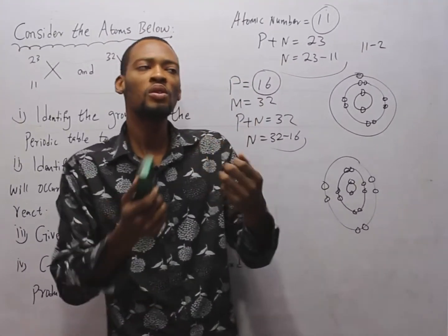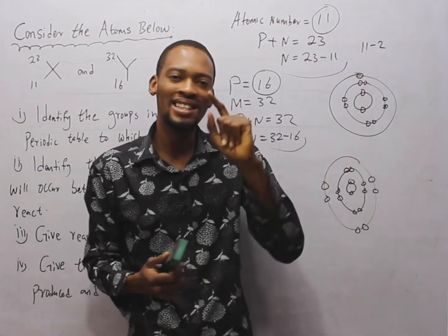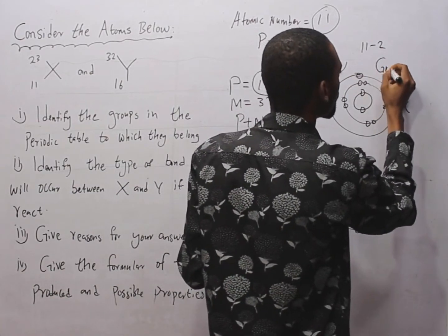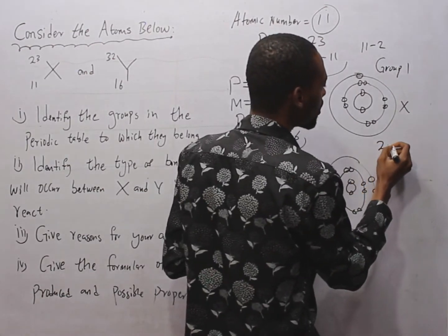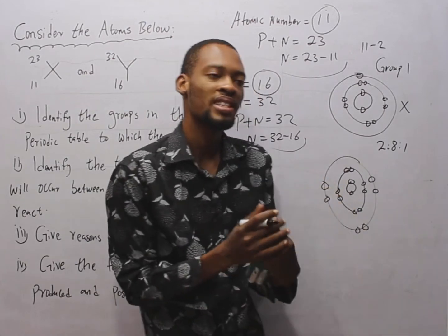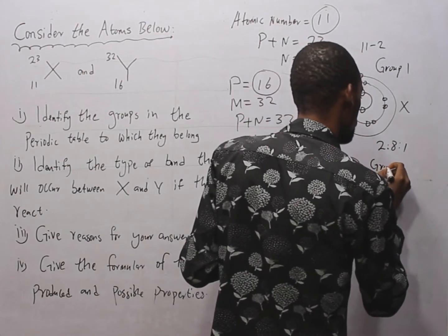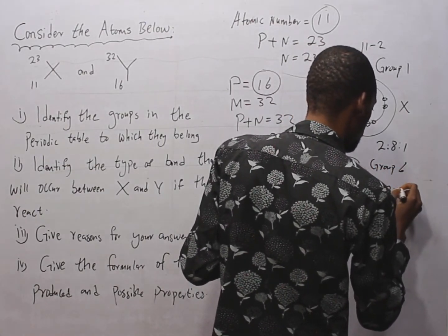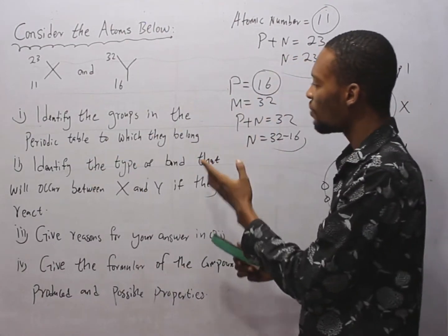The group to which an element belongs is simply the number of electrons in its outermost shell. S has configuration 2, 8, 1 — it belongs to Group 1. Y has configuration 2, 8, 6 — it belongs to Group 6. We have now identified the groups to which they belong.